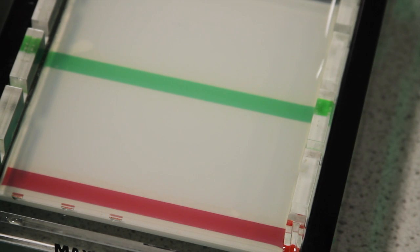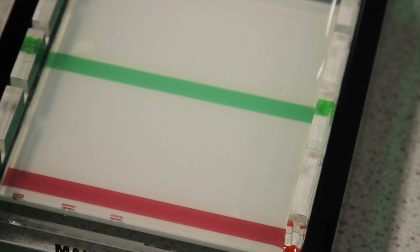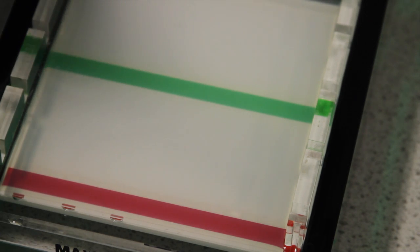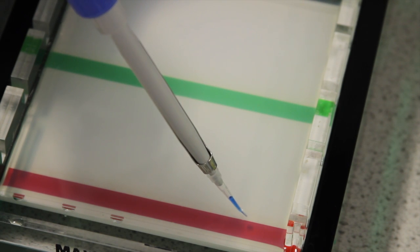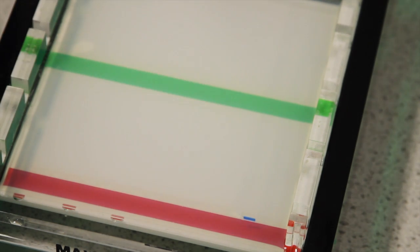Here the first two samples loaded are marker lanes. These are solutions of DNA fragments of known sizes. Draw the sample into a small pipette tip and carefully insert the tip below the surface of the liquid just over the well you want to load it into.